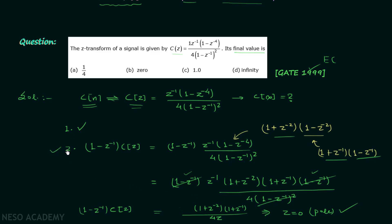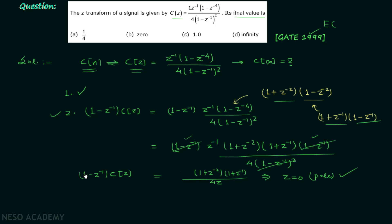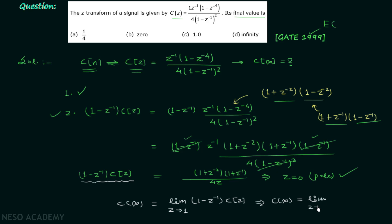According to the final value theorem, C(∞) is equal to limit Z tending to 1 of (1 - Z⁻¹)·C(Z). We have already calculated (1 - Z⁻¹)·C(Z), so we substitute and get C(∞) equal to limit Z tending to 1 of (1 + Z⁻²)(1 + Z⁻¹) divided by 4Z. Putting Z equal to 1 gives 2 multiplied by 2 divided by 4, which equals 1. Looking at the four options, option C is the correct answer.